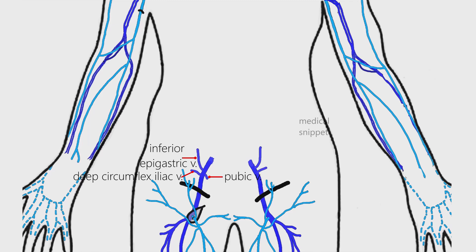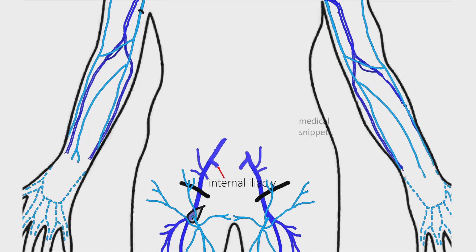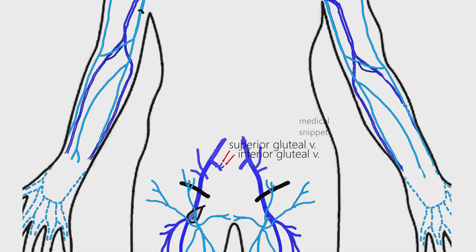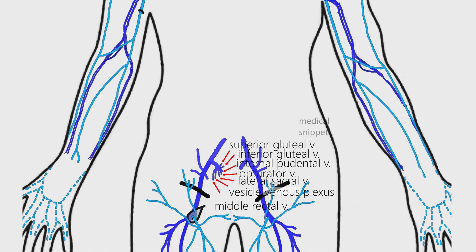The internal iliac vein joins with the external iliac vein to form the common iliac vein. The tributaries of the internal iliac vein are superior gluteal vein, inferior gluteal vein, internal pudendal vein, obturator vein, lateral sacral vein, vesical venous plexus, and middle rectal veins. In females, the tributaries also include uterine veins and vaginal veins.